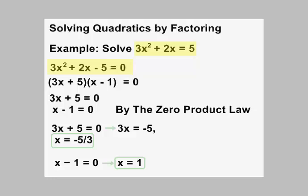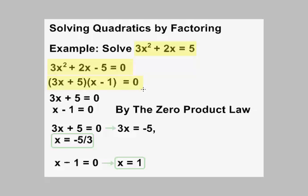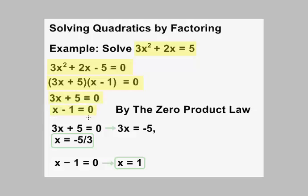Now we factor this. And this factors as (3x + 5)(x − 1) equals 0. Because this is equal to 0, we can apply the zero product law, letting each factor equal 0. We get 3x plus 5 equals 0, and x minus 1 equals 0.